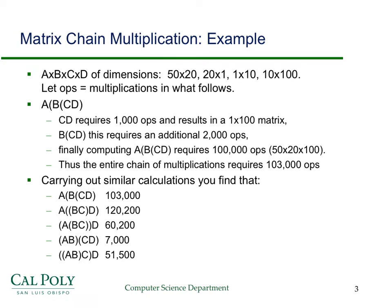Similarly, when we have something like this where A is on the outside, in order for A to be computed — if we're going to try to find the smallest one — we need to find out the smallest way to compute B times C times D. And that might either be this subproblem or this subproblem. So that's exactly how we're going to proceed.